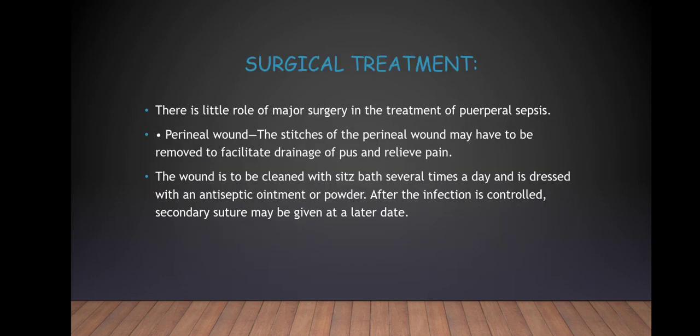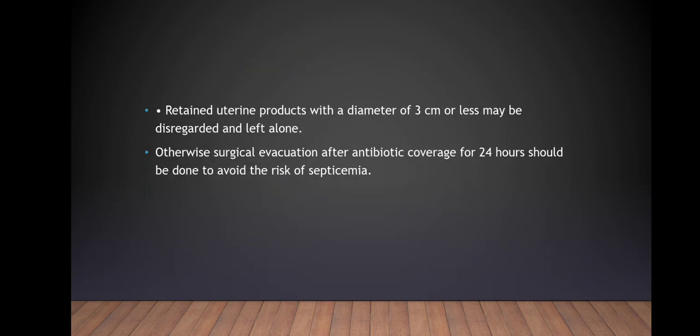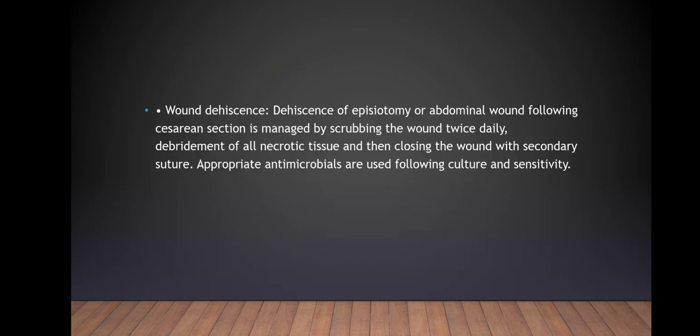Surgical treatment: there is little role of major surgery in the treatment of puerperal sepsis. For perineal wounds, the stitches may have to be removed to facilitate drainage of pus and relieve pain. The wound is to be cleaned with saline several times a day and dressed with an antiseptic ointment or powder. After the infection is controlled, secondary suture may be applied at a later date. Retained uterine products with a diameter of 3 cm or less may be left alone; otherwise surgical evacuation after 24 hours of antibiotic coverage should be done to avoid the risk of septicaemia. If there is wound dehiscence — of episiotomy or abdominal wound following caesarean section — it is managed by scrubbing the wound twice daily, debridement of all necrotic tissue, and then closing with secondary suture.